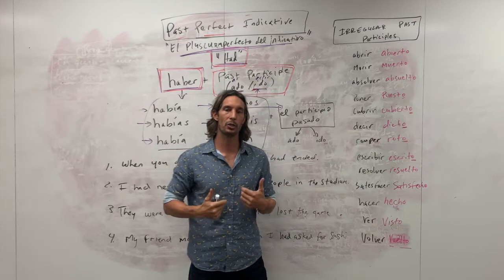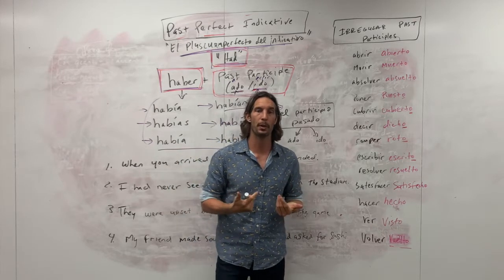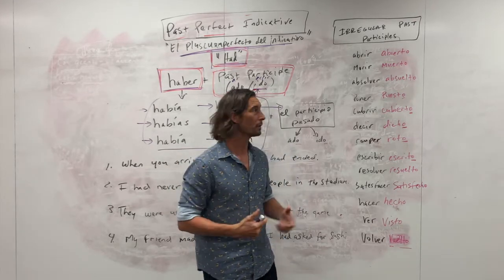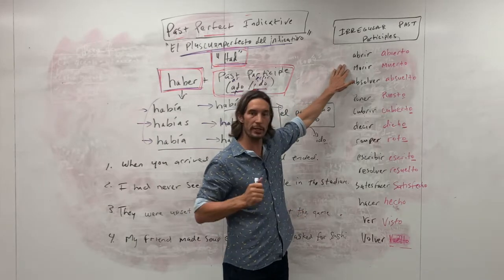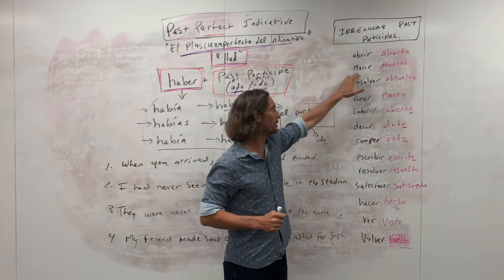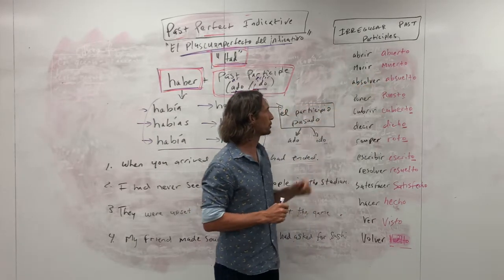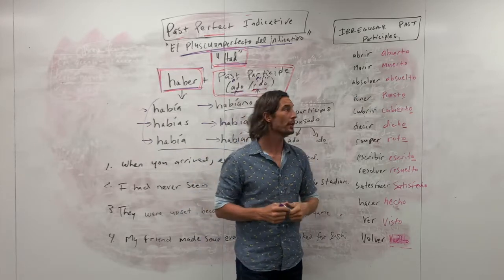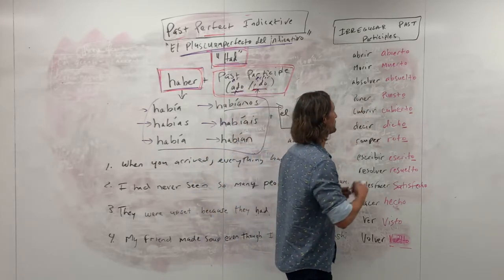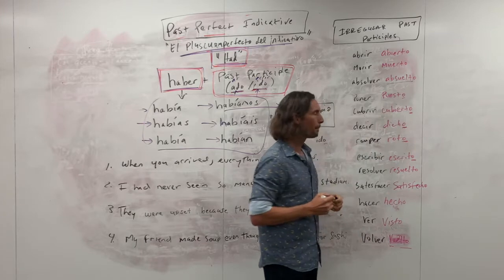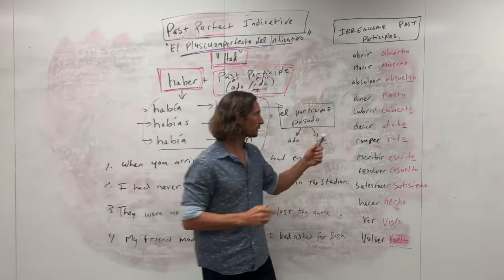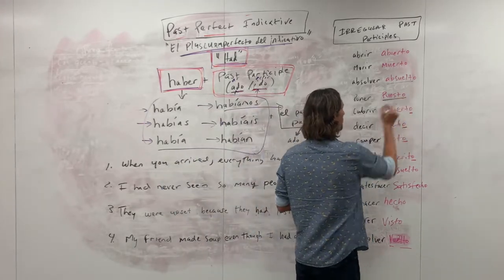So abrir is to open, and so its past participle is abierto, right? Morir means to die. Its past participle is muerto. Absorber means to absolve, and its past participle is absuelto. Poner is to put, and its past participle is puesto.